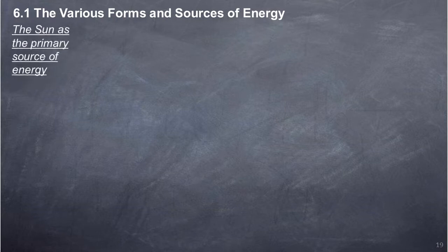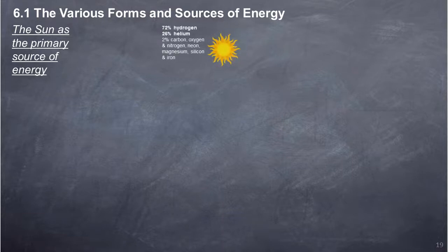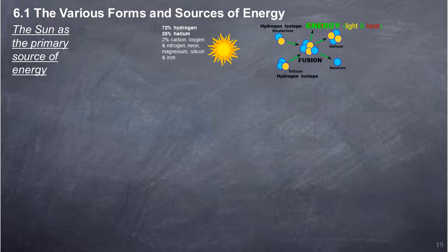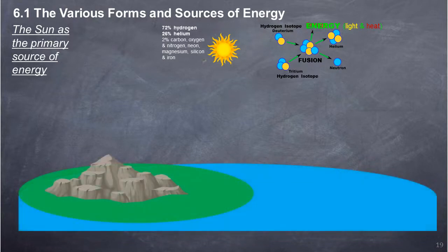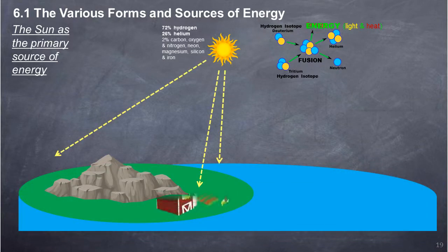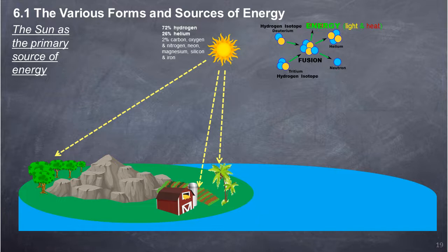The Sun is the Primary Source of Energy. The sun is a huge glowing sphere of hot gas, made up primarily of around 72% hydrogen and 26% helium. The sun gets its energy from nuclear fusion, where two atoms of hydrogen combine together to form an atom of helium. This nuclear fusion process releases an incredible amount of energy in the form of light and heat. When the light energy of the sun reaches earth, it helps in the photosynthesis process in plants, converting the sun's light energy into chemical energy stored as food in the plant.